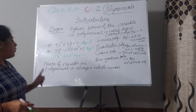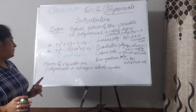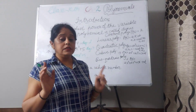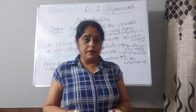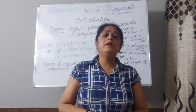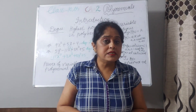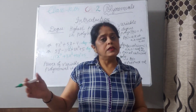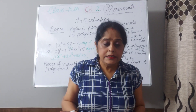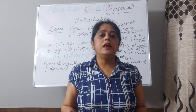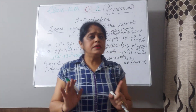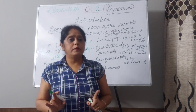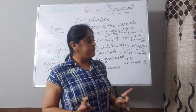The power of the variable in a polynomial is always a whole number. Whole numbers start from 0: 0, 1, 2, 3, and so on to infinity. This means the power of a variable should never be negative.